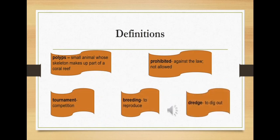There are perhaps one or two of those words that you may not know the definition of or be familiar with. Let's read through the definitions. Beginning with polyps. Polyps are small animals whose skeleton makes a part of a coral reef.